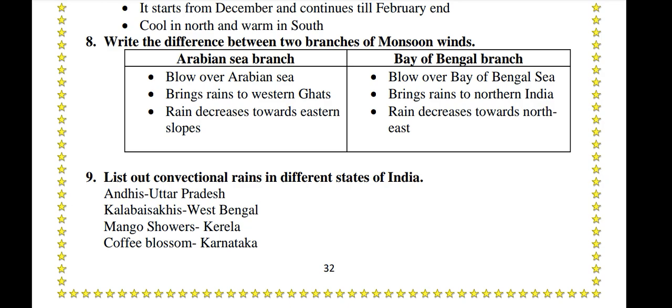Describe the difference between two branches of monsoon winds. Arabian Sea Branch: blows over the Arabian Sea, brings rains to the Western Ghats, and rain decreases towards the eastern slopes. Bay of Bengal Branch: blows over the Bay of Bengal, brings rains to northern India, and rain decreases towards the northeast.